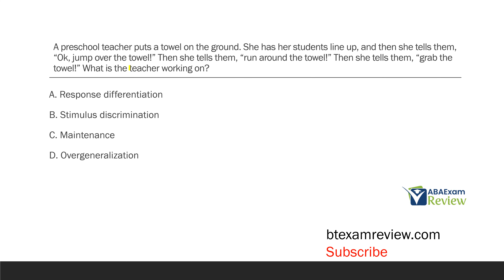We're looking at the teacher's behavior. She's trying to teach her students something. There's a towel on the ground, students line up, and she tells the students to engage in all kinds of different responses — jumping, running around, grabbing the towel — all in the presence of that same stimulus, which is the towel. When we engage in different topographical responses in the presence of a stimulus, what are we doing? The teacher is teaching response differentiation — she's teaching the children to differentiate their responses.